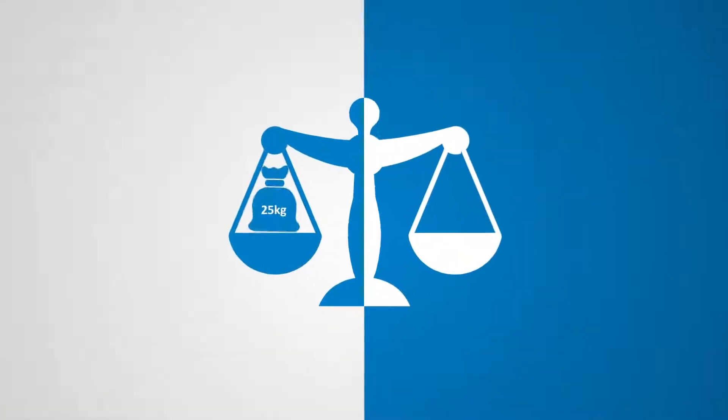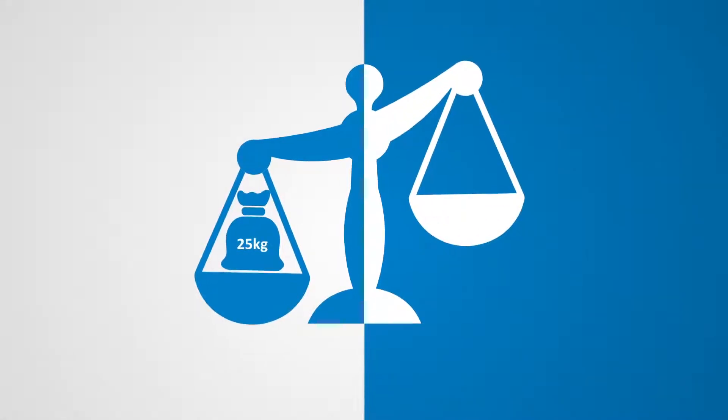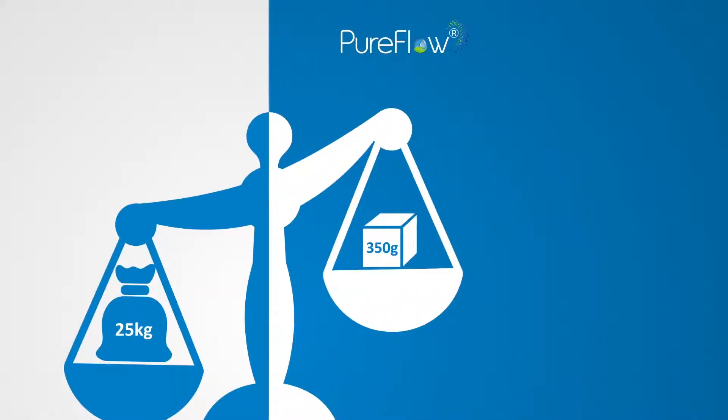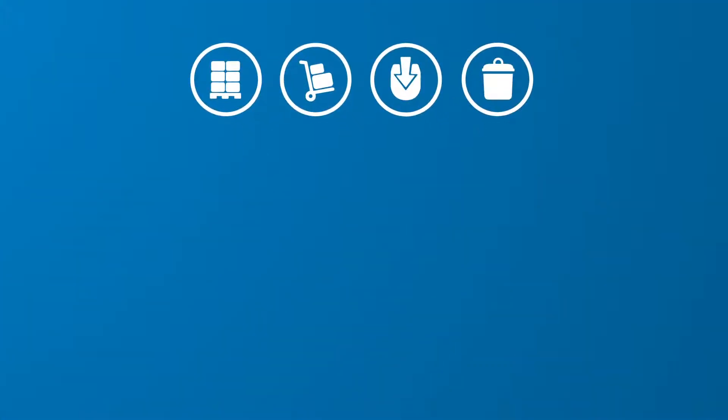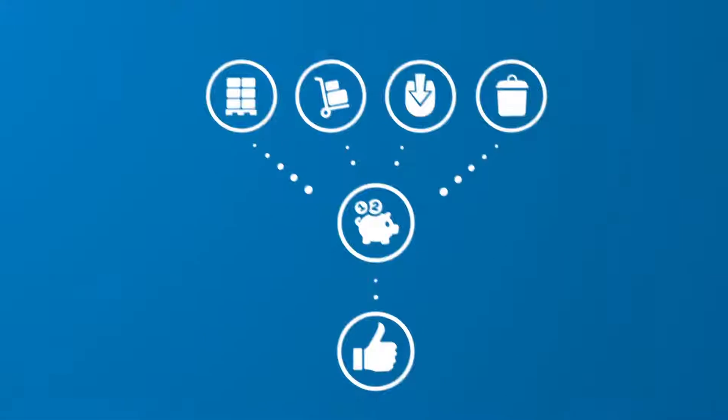Instead of 25 kilograms of filter material, you only need 350 grams of PureFlow. Therefore, storage, transport, filling and disposal will get extremely cheap and thus highly efficient.